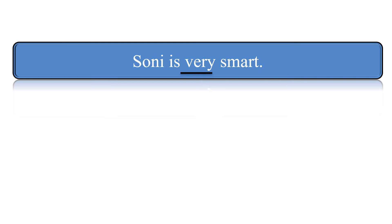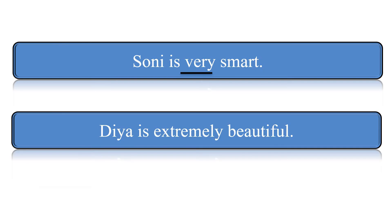'Very' is showing the intensity of the adjective 'smart', so 'very' is the Adverb here. Another example: Dia is extremely beautiful. How much beautiful is Dia? Agar aap 'how much' question create karenge toh the answer you will get is 'extremely'. Toh 'extremely' huwa humara Adverb of Degree.